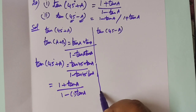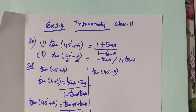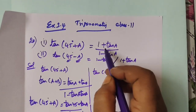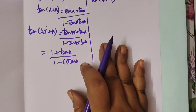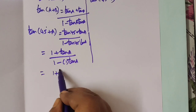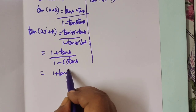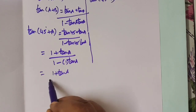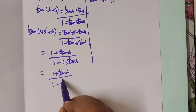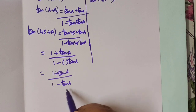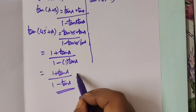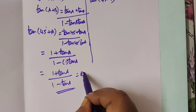So this is the answer to be proved: (1 + tan a) / (1 - tan a). Equal to (1 + tan a) / (1 - tan a). So, equal to RHS.